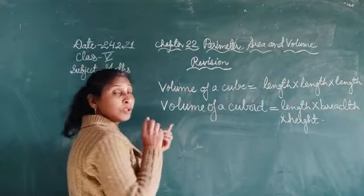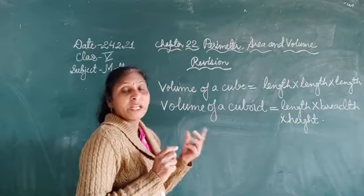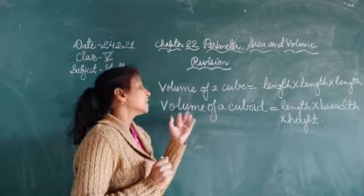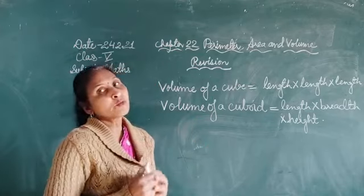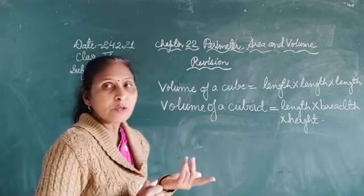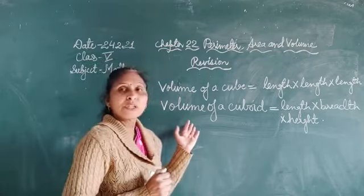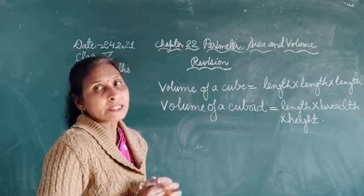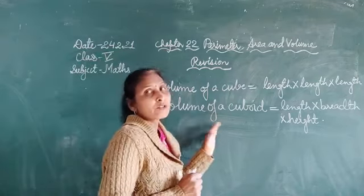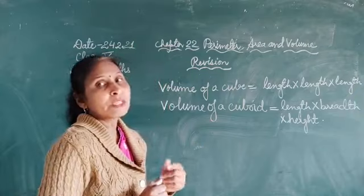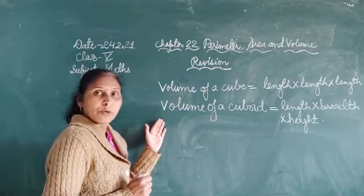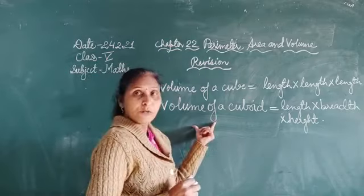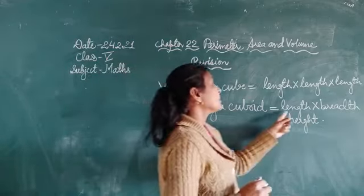The unit of volume of a cuboid is meter cube or cubic meter — the same unit as volume of a cube. If the length is given in meters, then the unit will be meter cube or cubic meter. Now if we want to find the volume of a cuboid, we multiply length by breadth by height.